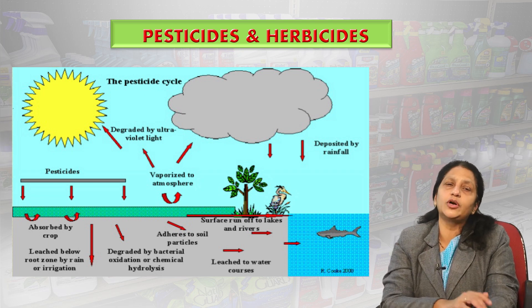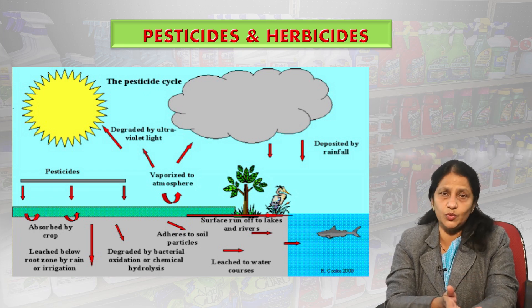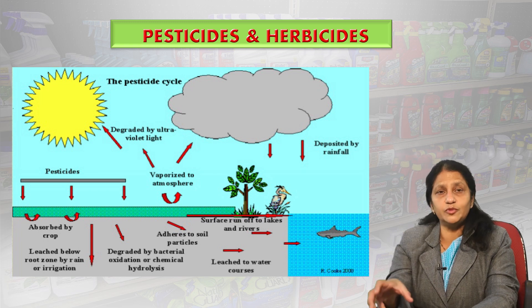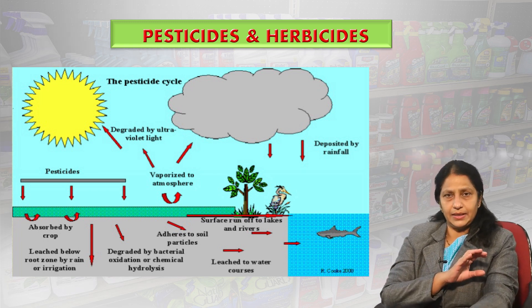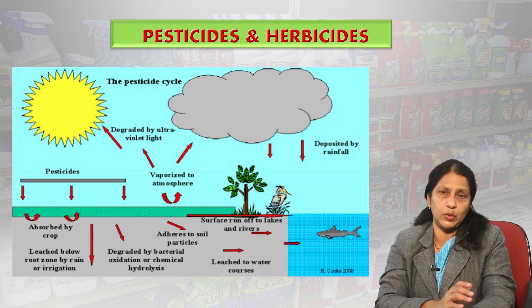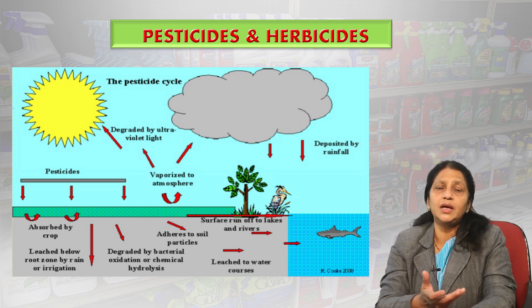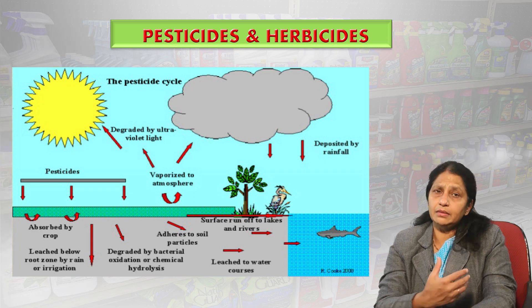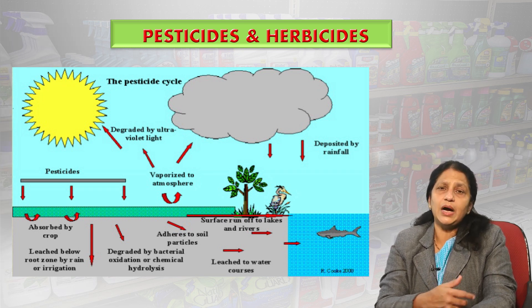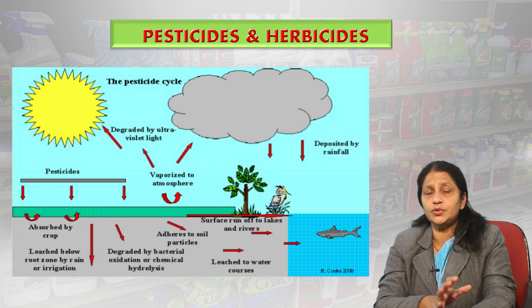Most off-site pesticide movement in water is either by runoff — surface movement — or by leaching, which is downward movement through the soil. Runoff and leaching can occur when too much pesticide is applied beyond what is required, by accidental spill, or when too much rain or irrigation water moves pesticides through the soil off-site, potentially entering groundwater. Highly water-soluble and persistent pesticides are especially prone to this.